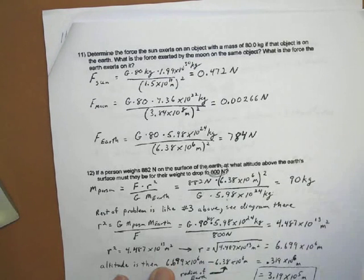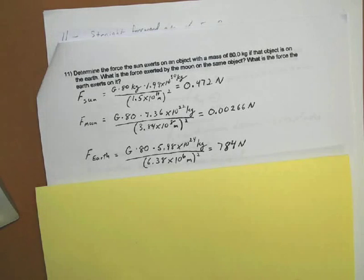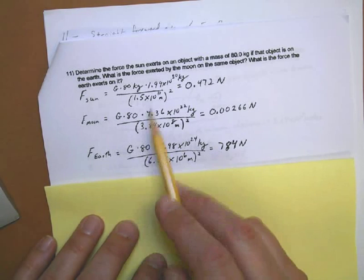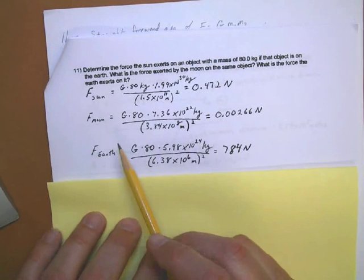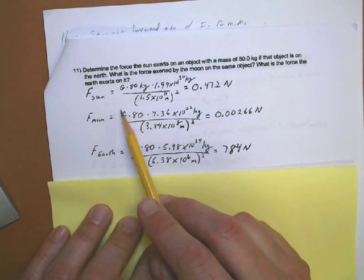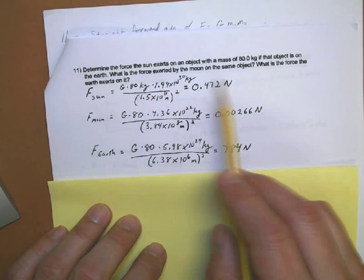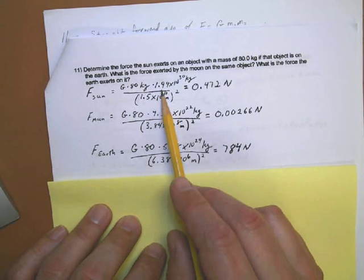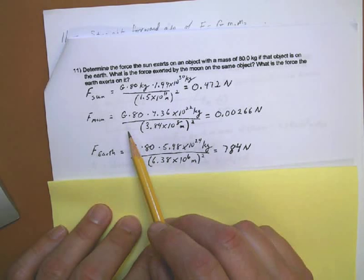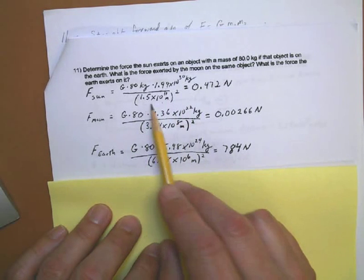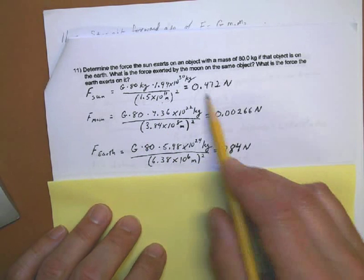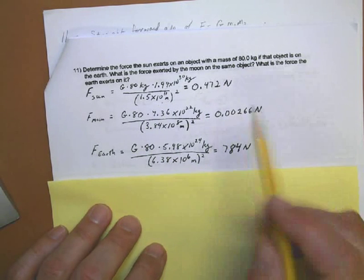All right. Well, my notes here for number 11 say see the other sheet because they're straightforward examples. So, at number 11, you are working the problem straightforward without having to isolate any variables. The force and all the data is given on the front sheet. You're given the object's mass. So, the force exerted on that object by the sun would be, so the object's on the earth, so you know the distance is the distance between the sun and the earth, the mass of the object, I'm sorry, the mass of the sun, this is the distance to the sun squared, and you get this small number, 0.472 newtons when you plug in the value of G.